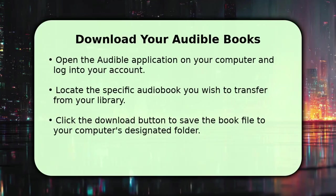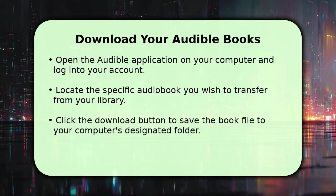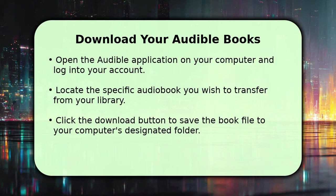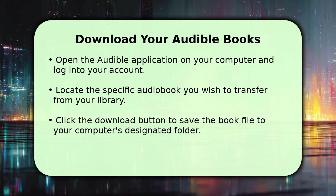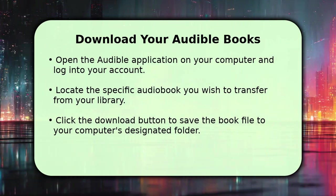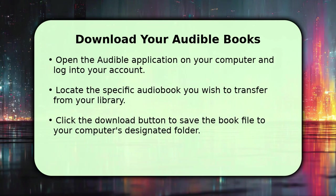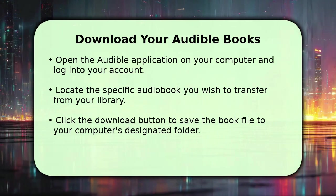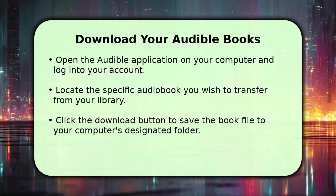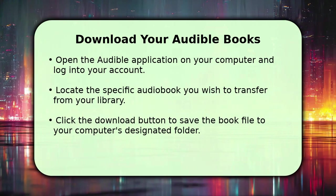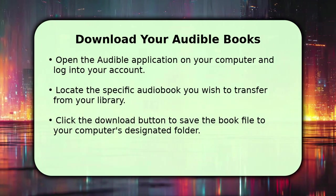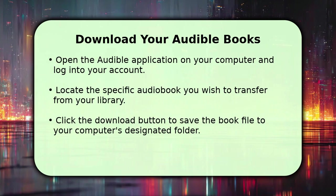Once you are logged into your Audible account on the desktop app, navigate to your library. Find the audiobook you want to transfer. You can use the search bar if you have many titles. Click the Download button next to the title, and the book will begin saving to your computer's downloads folder or the location you have set in Audible's preferences.